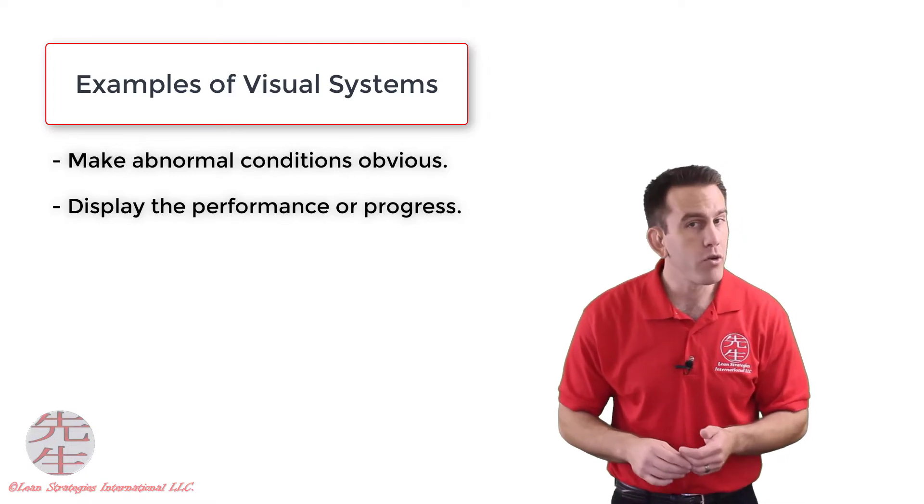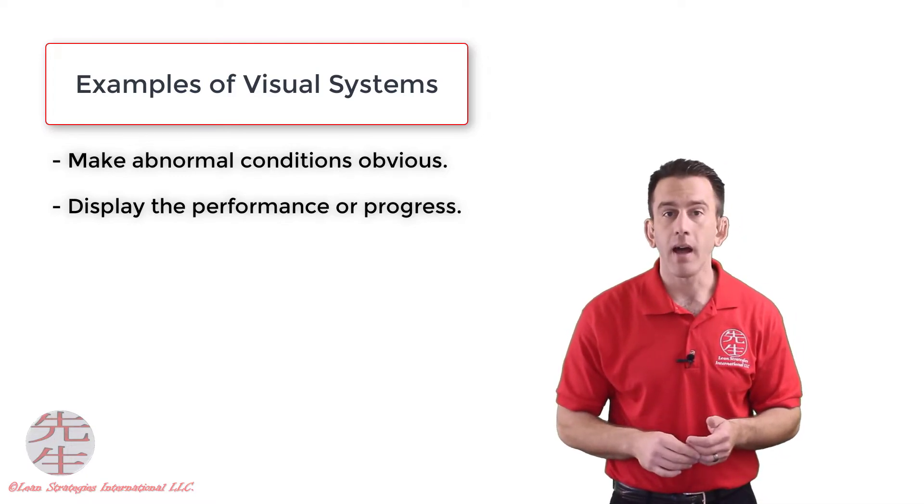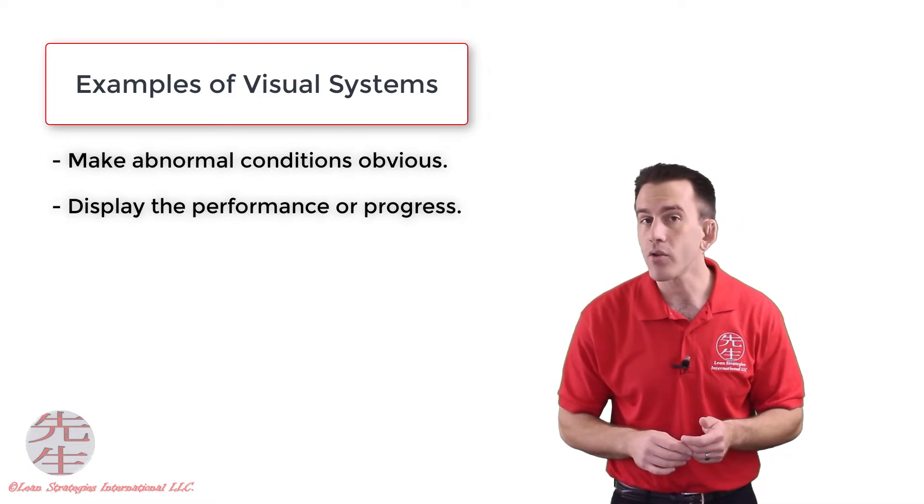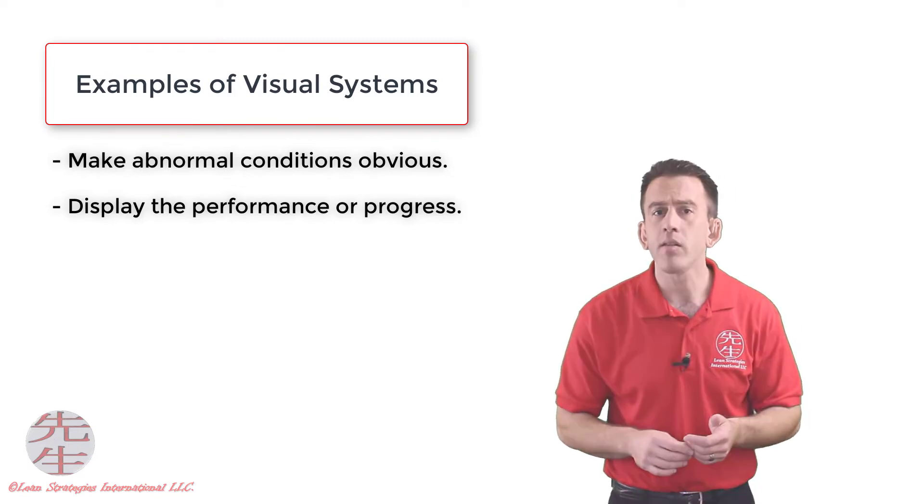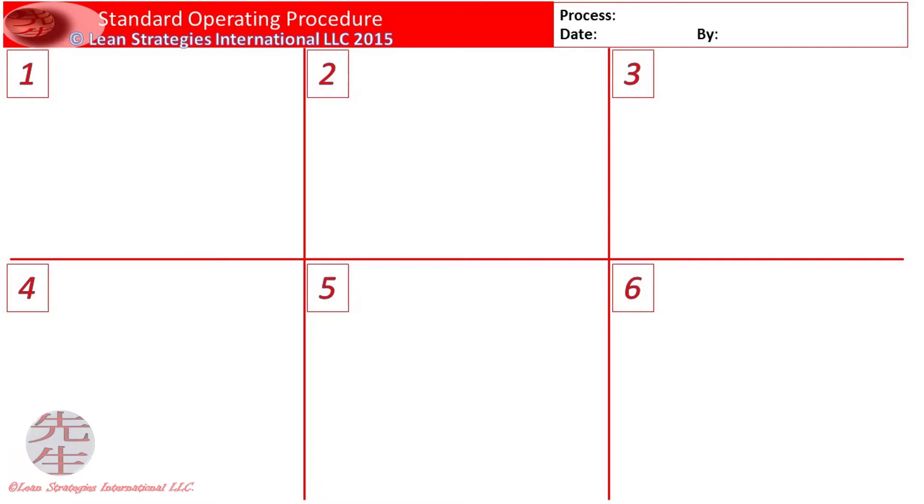The last example of a visual control we will look at in this introductory lecture is a visual control that clearly displays a standard operating procedure. These types of visual controls are placed near the point of use and help control the operator's activities by transferring information so that the worker can correctly perform the procedure they are working on.